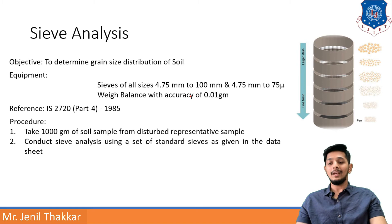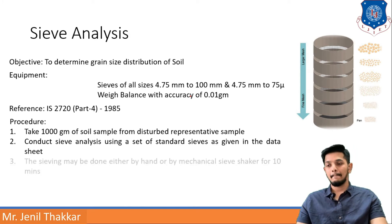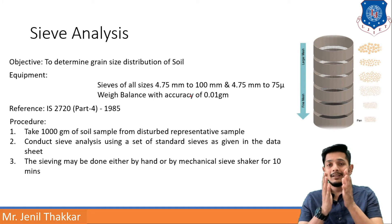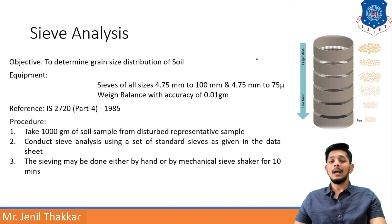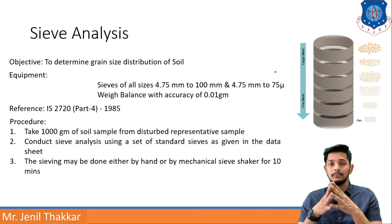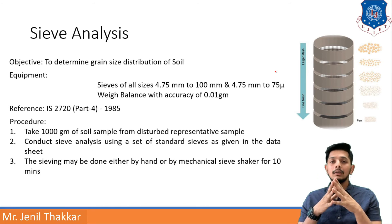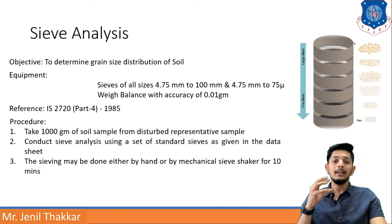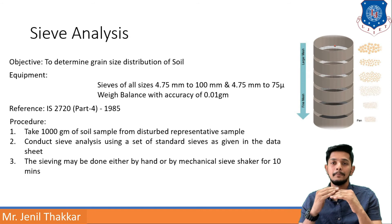Second step: conduct sieve analysis using a set of standard sieves as given in the data sheet, which will provide you the sizes of sieves. The sieving may be done either by hand or by mechanical sieve shaker for 10 minutes. In labs, mechanical sieve shakers are generally used, and they shake the sieves in a systematic manner. After 10 minutes, all the soil will be distributed in the different sieves.